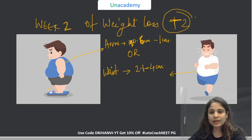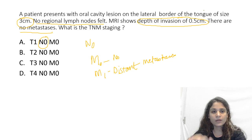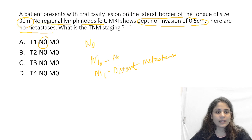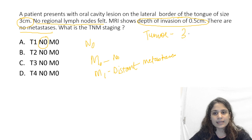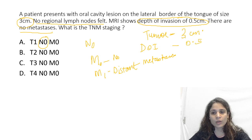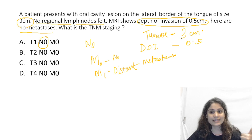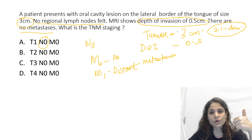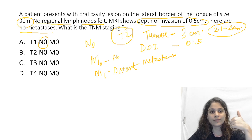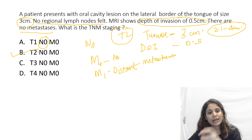Going back to the question: the size of the tumour is 3 cm and the depth of invasion is 0.5 cm. In week 1, the loss was less than or equal to 2 cm. In week 2, the loss was between 2.1 to 4 cm. So the tumour size of 3 cm falls in week 2 of weight loss, which is T2. Therefore, your answer is T2N0M0.